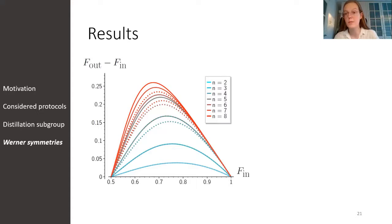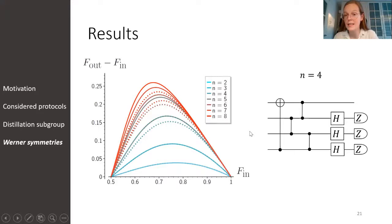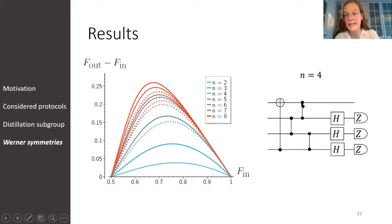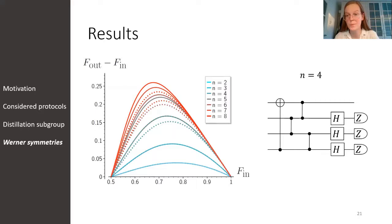Moreover, the circuits that we found have a comparable depth and number of two-qubit operations as previously known protocols. For instance, for n=4, we found the following protocol that achieved the highest fidelity. This protocol should be applied on both Alice and Bob's side, and we see that it consists of four two-qubit operations — namely one CNOT operation and three CZ operations — and that it has depth 3. For other values of n, we have included circuits in our paper. This indicates that the protocols we found are experimentally feasible. In our paper, we have included a more in-depth comparison between previously known protocols and our new protocols.